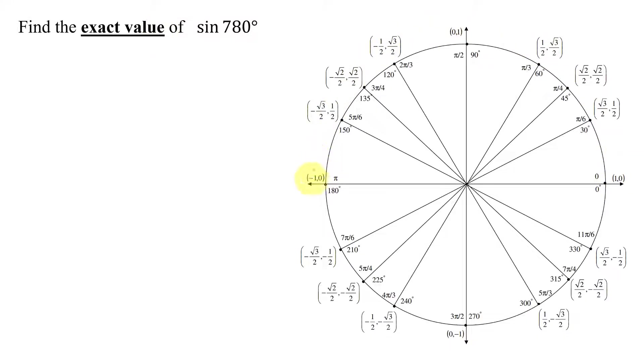You need to use the unit circle over here. But is 780 degrees on my unit circle? No, notice all the angles on the unit circle lie between 0 and 360 degrees.